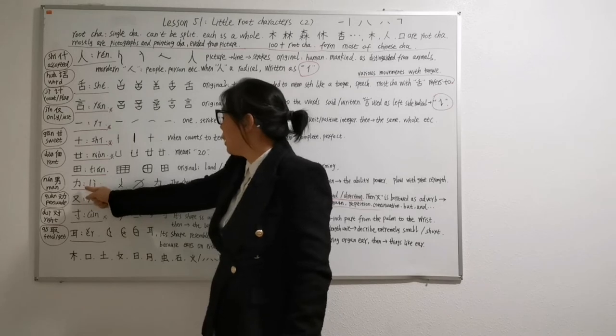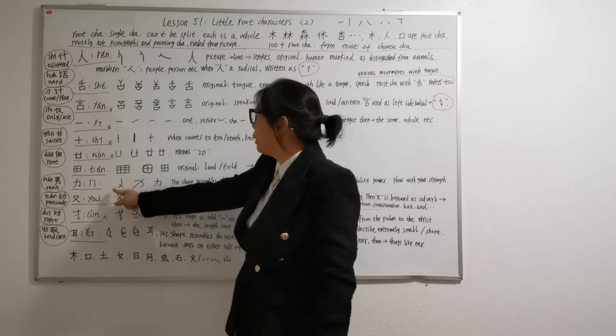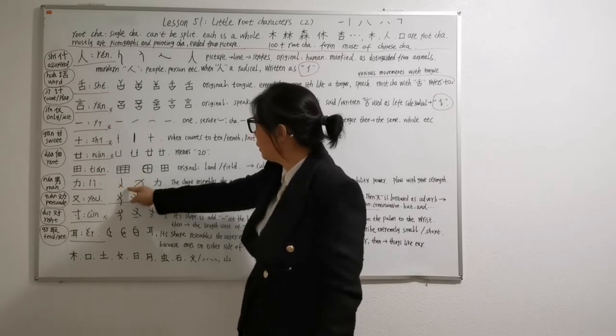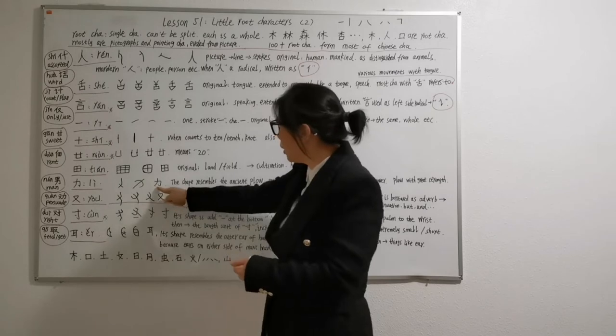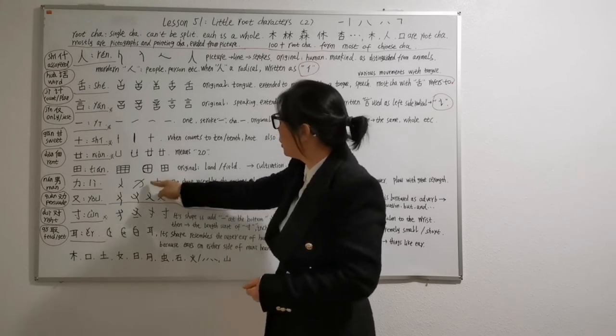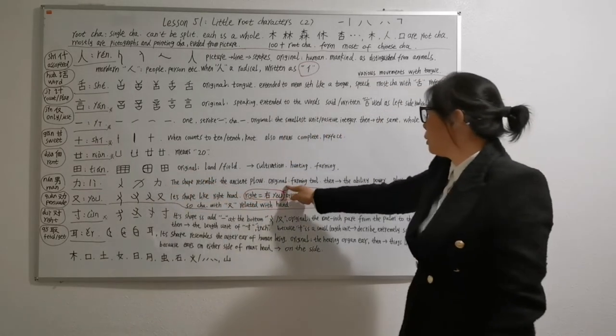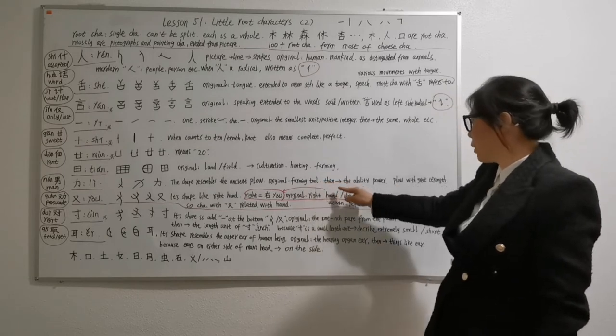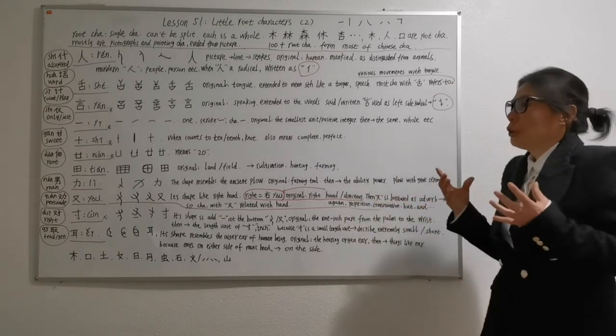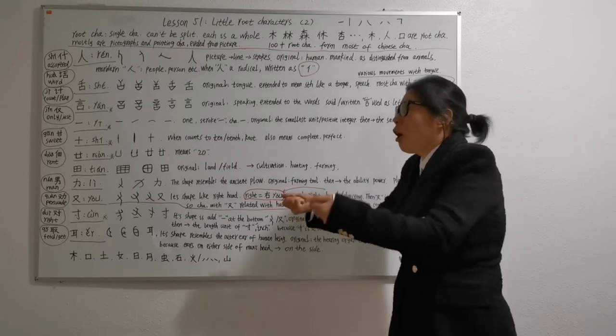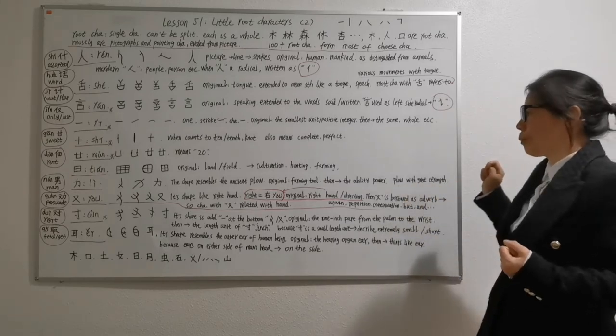This one, pronounce is le yi li. Li, strength. Its first shape is this one. This is ancient plow. Later, changing to this, finally, changing to this shape, this modern character, li. Li is farming tool, then extended to the ability, power, because you plow, you use plow, you need to do it with strength. Plow needs great strength.